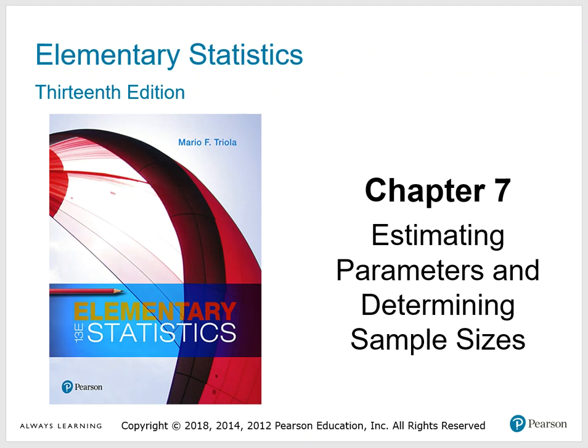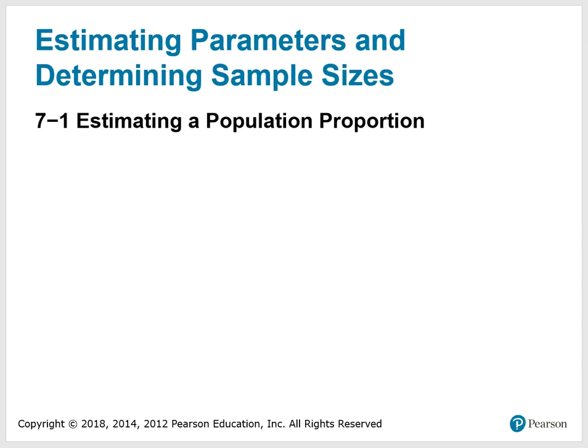Chapter 7: Estimating Parameters and Determining Sample Size. The first section, 7.1, we will be estimating a population proportion.